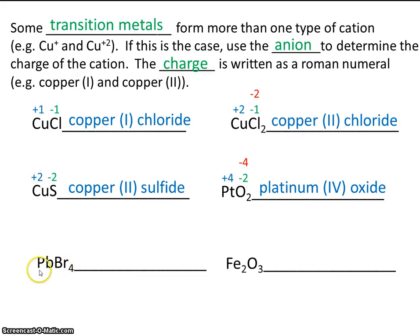Here's lead and bromine. Well, lead is, of course, a transition metal because it's found in the middle of your periodic table. Bromide always has a charge of minus 1, and we have 4 bromides. So that's a total of minus 4. So lead has to be plus 4. So the name of this is lead 4 bromide.